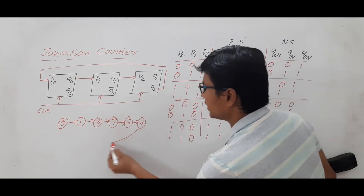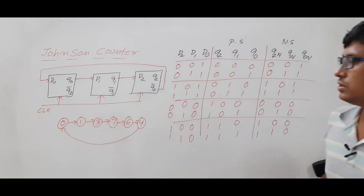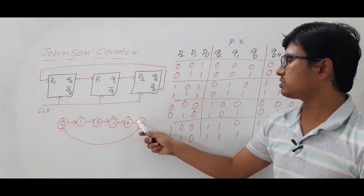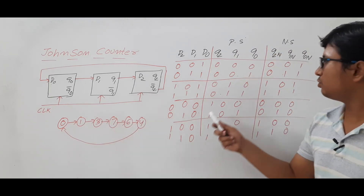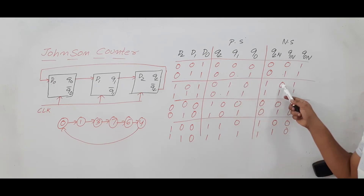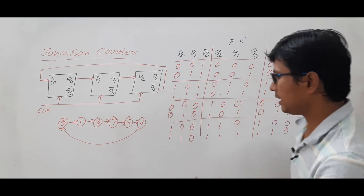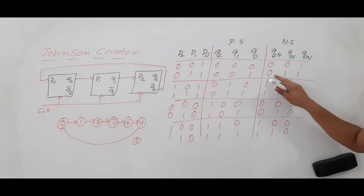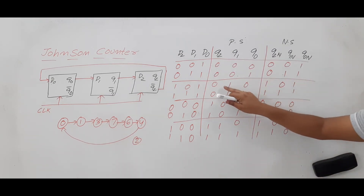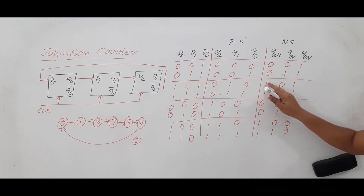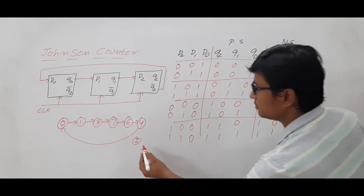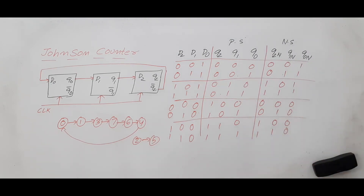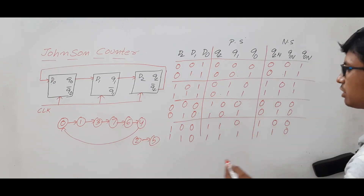So the main sequence is: 0 → 1 → 3 → 7 → 6 → 4 → 0. The remaining states are 2 and 5. From state 2 (010), the next state is 5 (101). From state 5, the next state is 2. So states 2 and 5 form a separate loop.